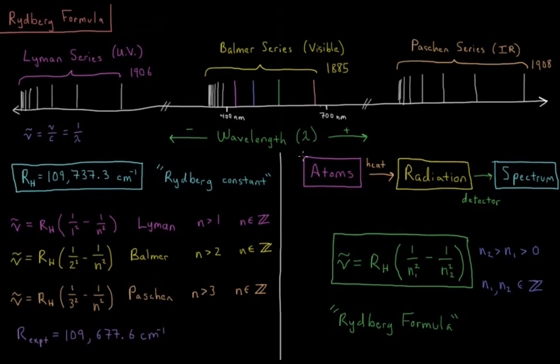If we take a bunch of atoms, specifically hydrogen atoms, and we heat them up or do something to get them to emit radiation, they're going to take all that heat and move it away as radiation. Those photons go towards a detector. The detector records the frequency or wavelength of all those photons hitting it, and this gives us a spectrum.